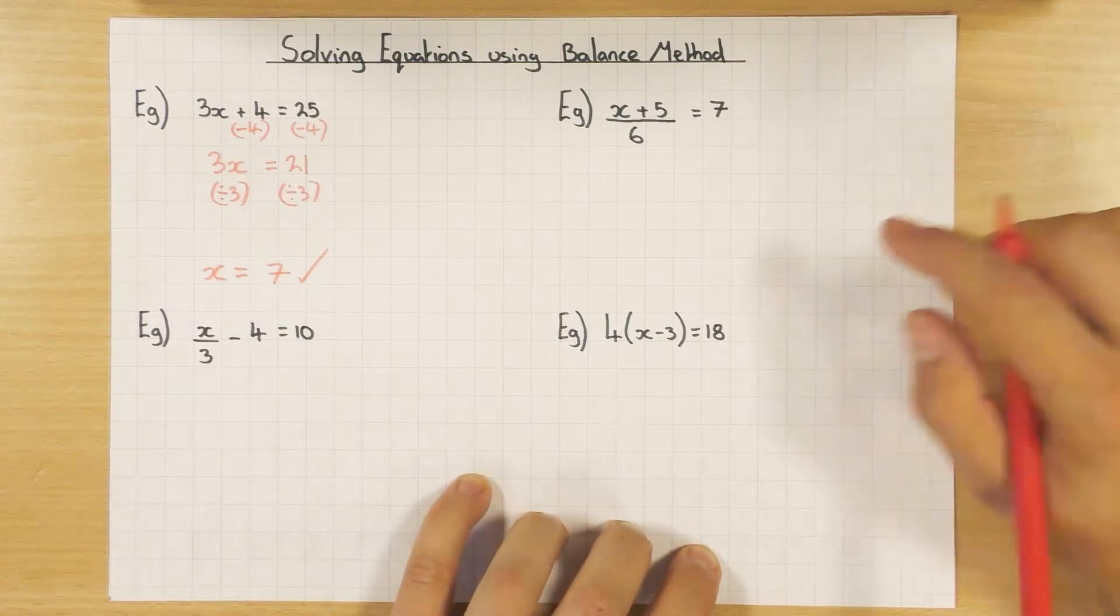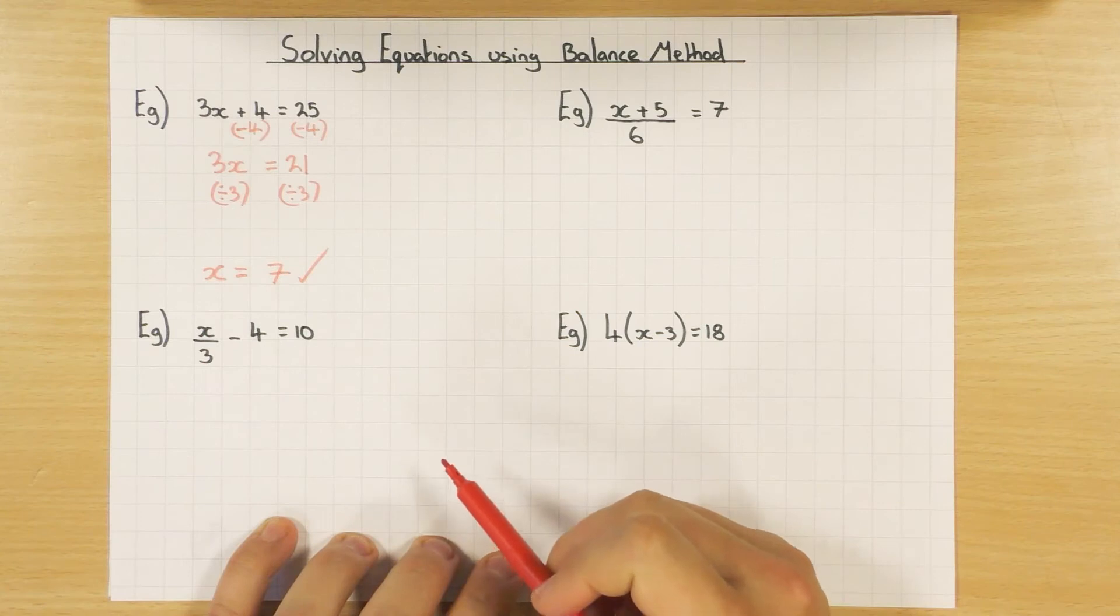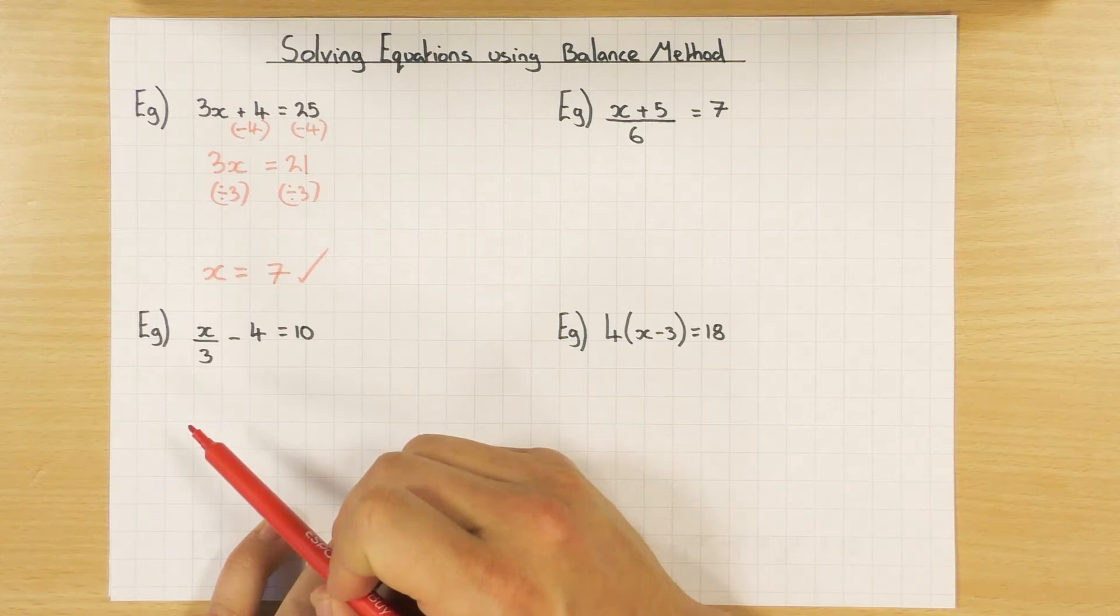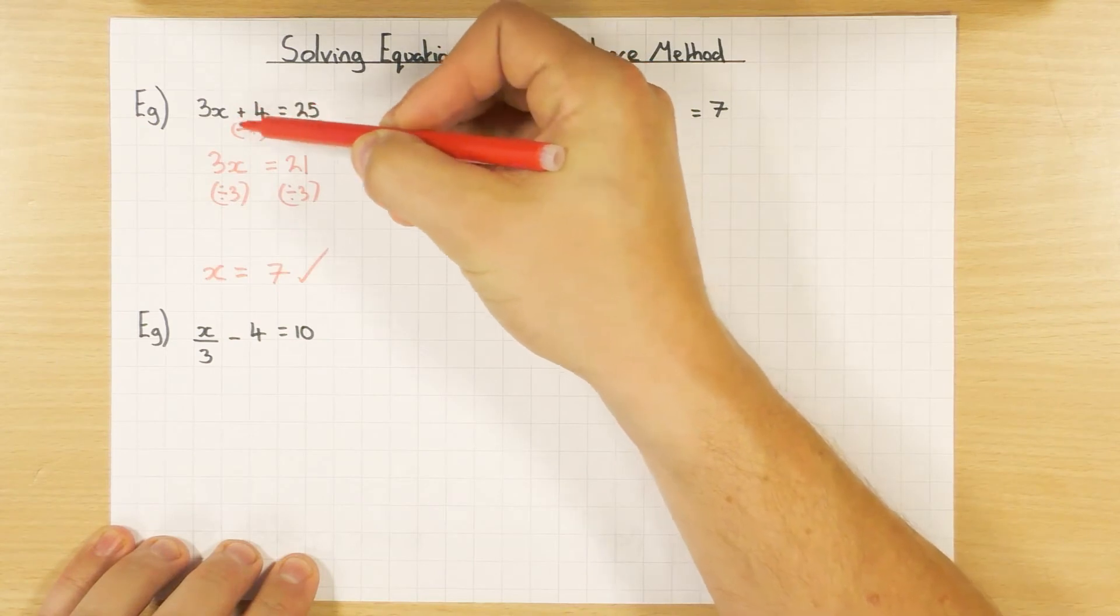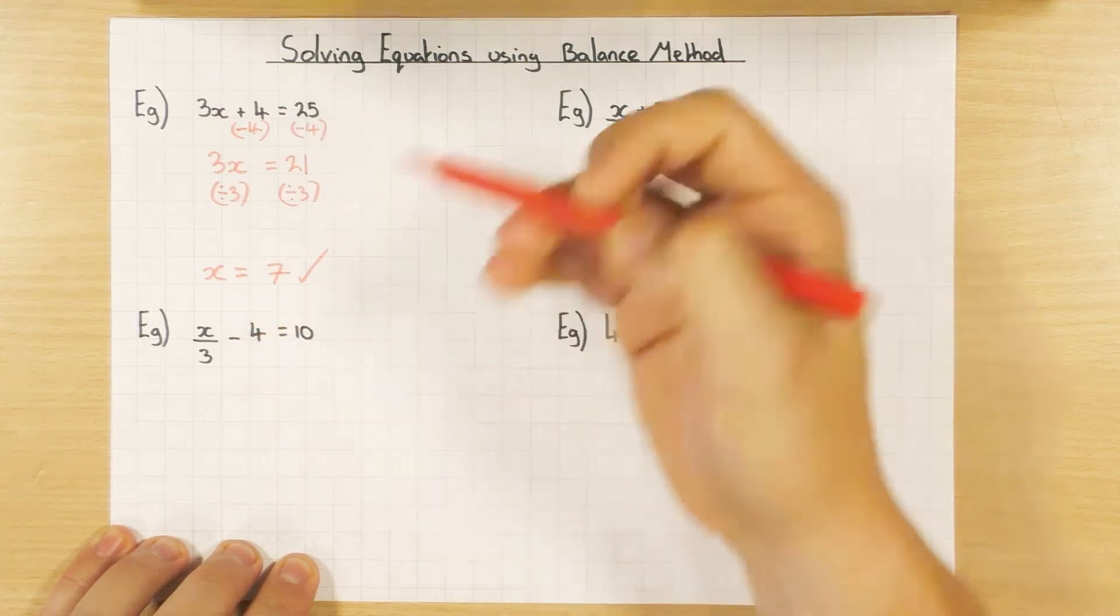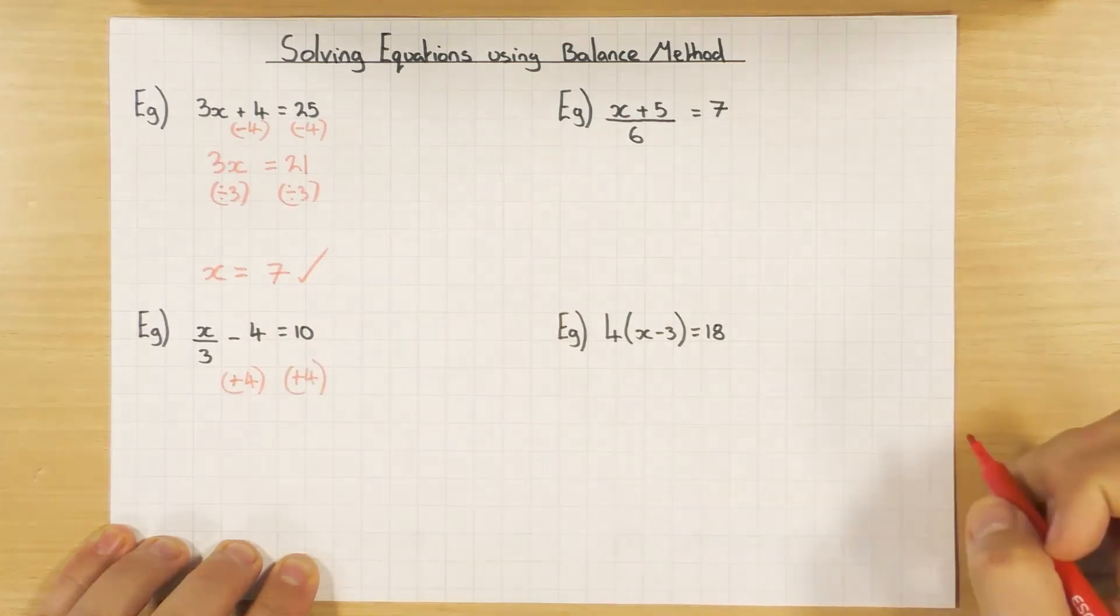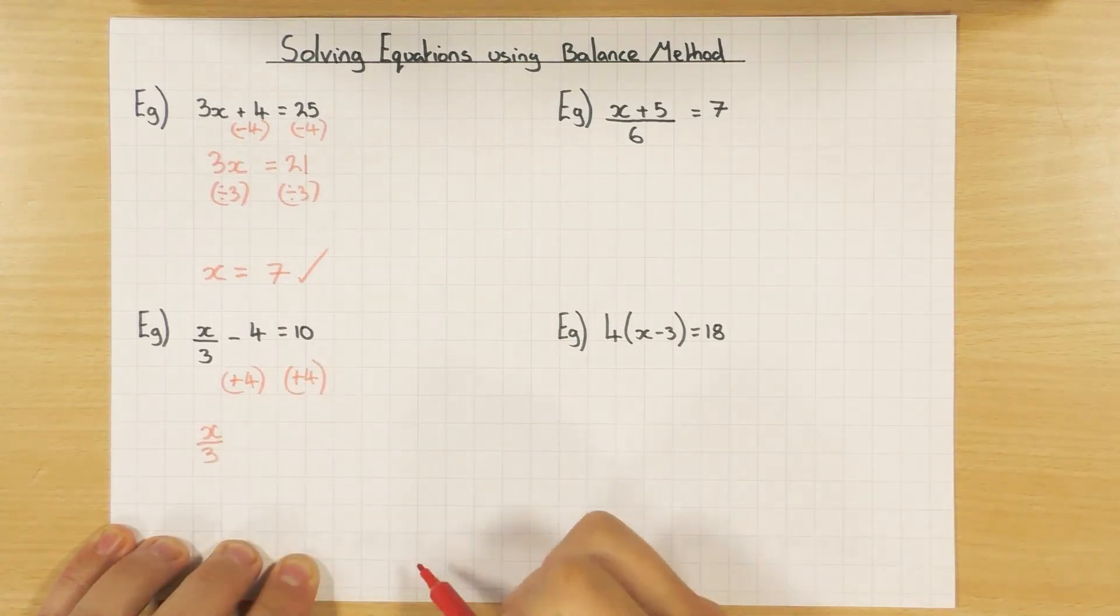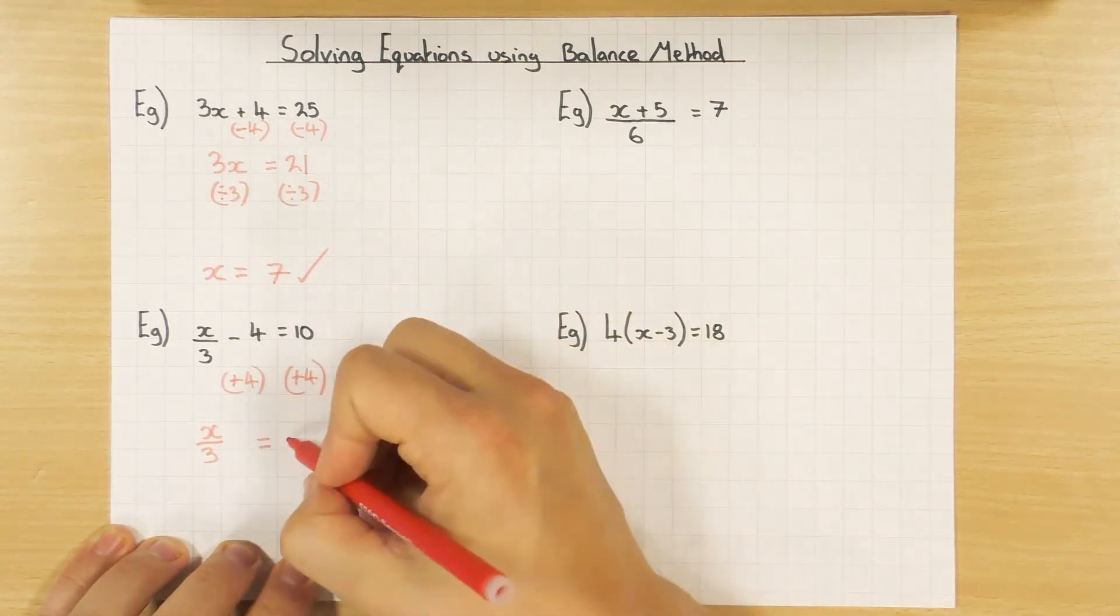Let's have a look at some slightly trickier ones. So this one here, I've got x divided by 3, take away 4 equals 10. Exactly the same process. x is tied up with that divide by 3. I'm going to leave it for now and just deal with this number here. This time, up here, I added 4, I did the opposite and took away 4. Here, it's minus 4, so I'm going to do the opposite and plus 4. Again, to both sides, so they're balanced. They still stay balanced. So what am I left with? I'm going to have x divided by 3 still. They're going to cancel out. And that equals 10 plus 4, which is obviously 14.